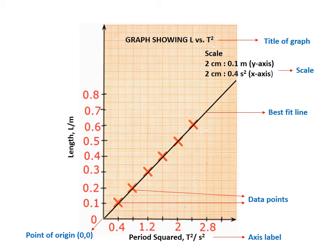So on our y-axis, you are seeing that for every 2 centimeters, it is representing 0.1 meters. And for your x-axis, for every 2 centimeters, it is representing 0.4 squared seconds. So that's our scale.